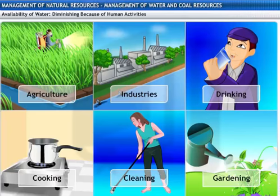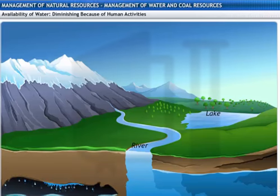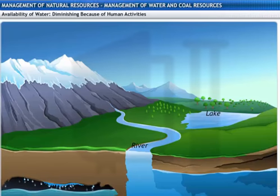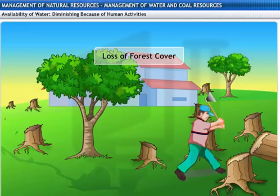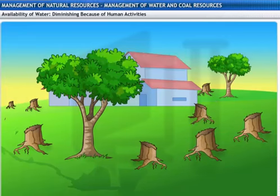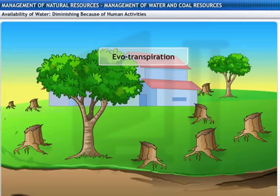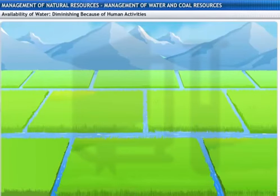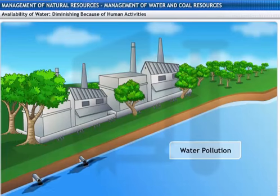We can now understand that the usage of water is more when compared to the availability. But even the available fresh water is fast diminishing, which is a major cause of concern. This happens because of the following three reasons: human activity results in the loss of forest cover, which in turn reduces the amount of water vapor released during evapotranspiration; deforestation has also reduced the recharging of underground water. Secondly, a lot of water is diverted for high water-demanding crops. Lastly, dumping of industrial and urban wastes into lakes and rivers results in water pollution.